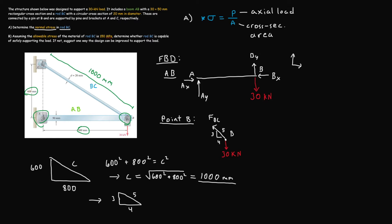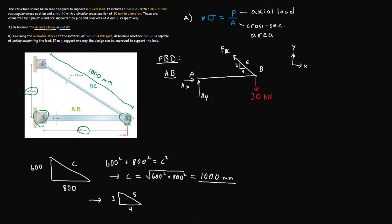Our coordinate system is simply x and y — remember that this is important to show in your sketches. Now on the free body diagram I'll replace the reaction forces with force FBC. This completes our free body diagram of boom AB and we can now solve for force FBC.